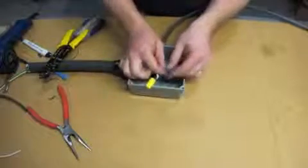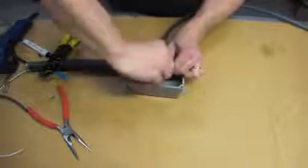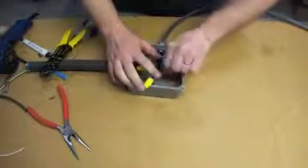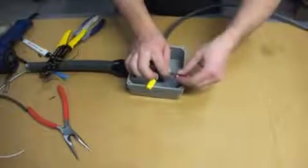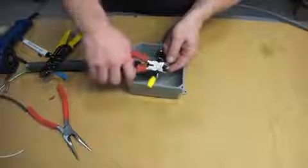Attach the ground braid from the heat cable to the ground wire from the power supply. Twist together properly. Slide the brass grommet over the connection and crimp firmly with a pair of pliers. Make sure they are firmly attached and won't slide apart.